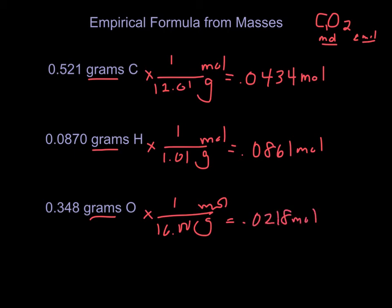Well, my compound can't be C.0434, H.0861, O.0218, because compounds have whole numbers in them. So how do I get to my whole numbers? Well, there's a trick. I'm going to divide all three numbers by the smallest number, 0.0218.